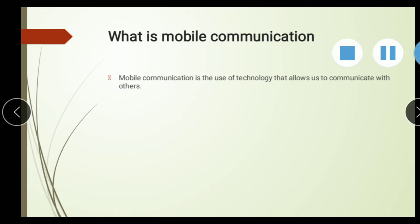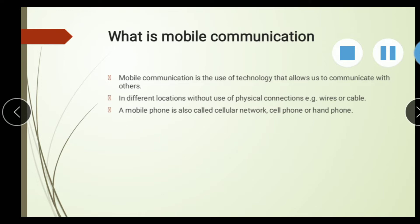Mobile Communication is the use of technology that allows people to communicate with each other in different locations, without use of a physical connection — that is, wire or cable. A mobile phone is also called a cellular network phone, cell phone, and hand phone.